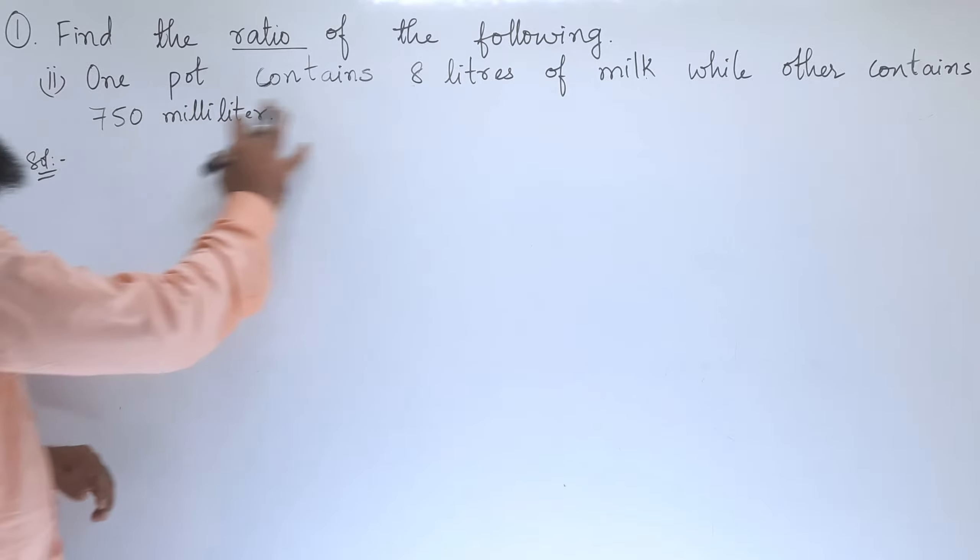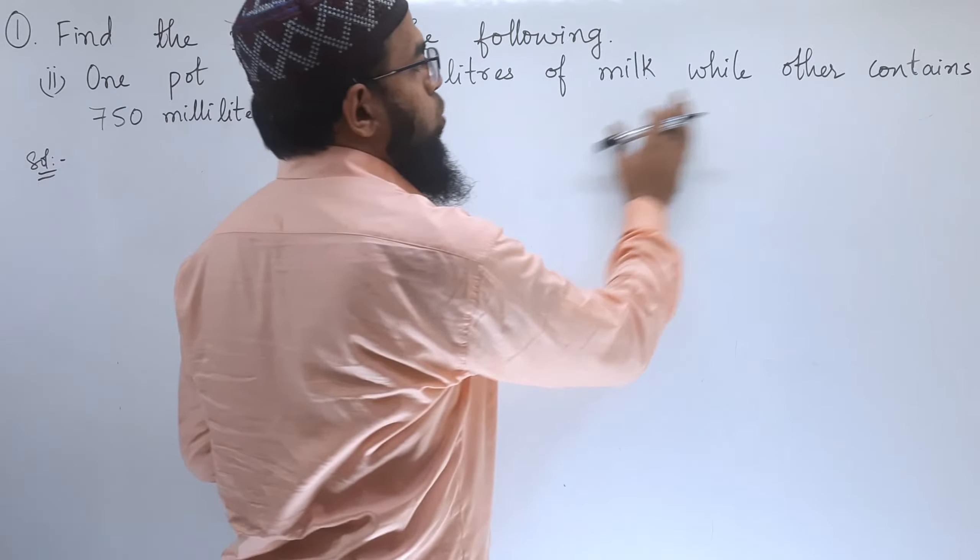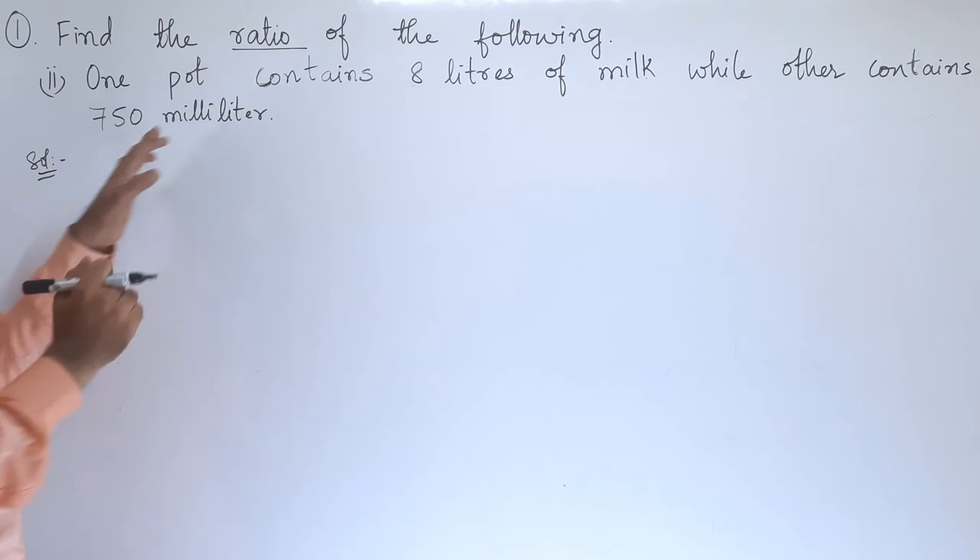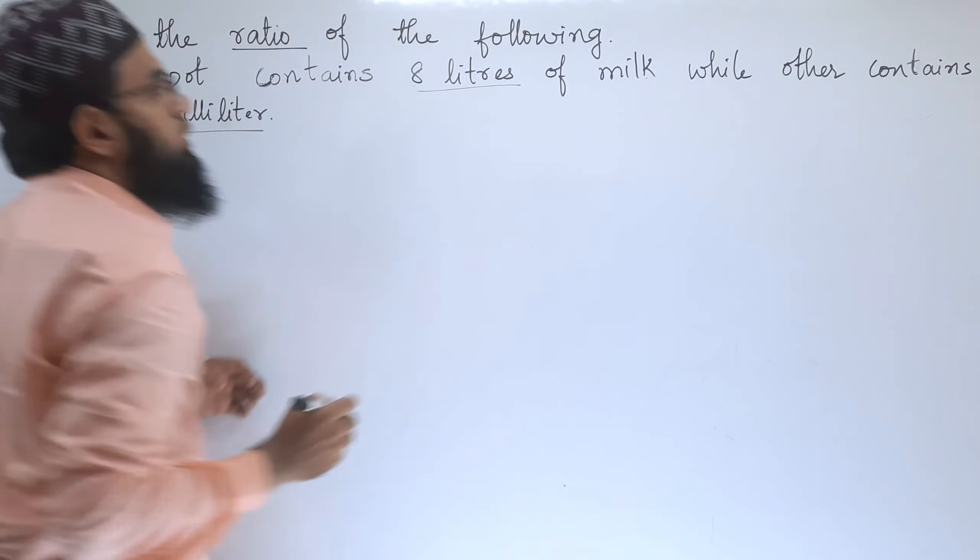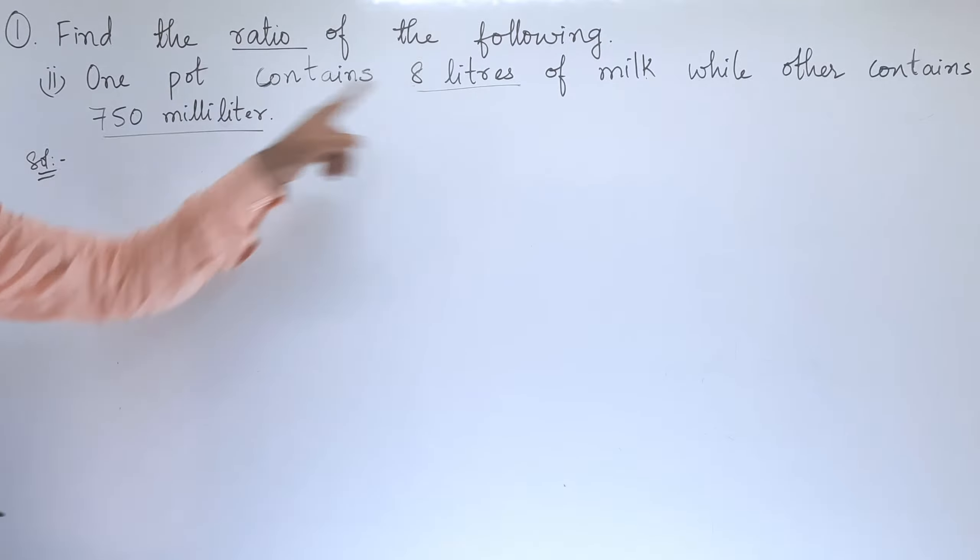Second bit, one pot contains 8 liters of milk while other contains 750 milliliter. For this, we will write, first of all, we will see that these units are same or not. Since the units are different like liters and milliliter, so we need the same units.